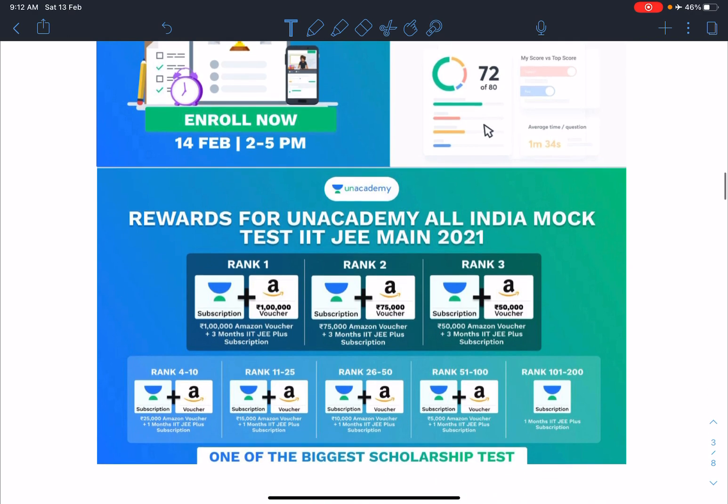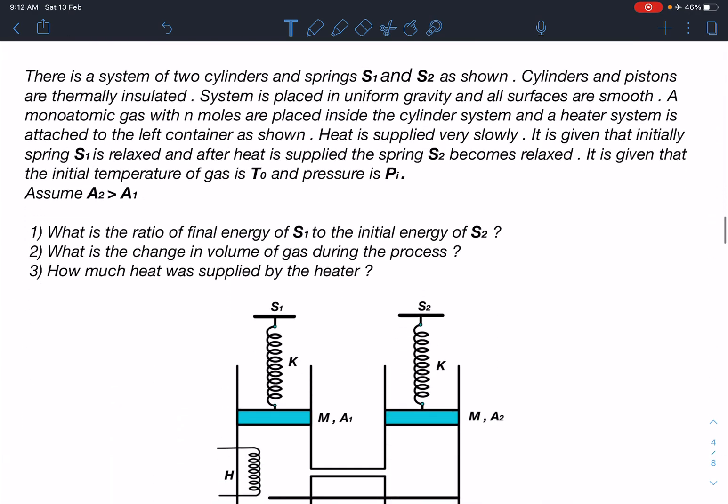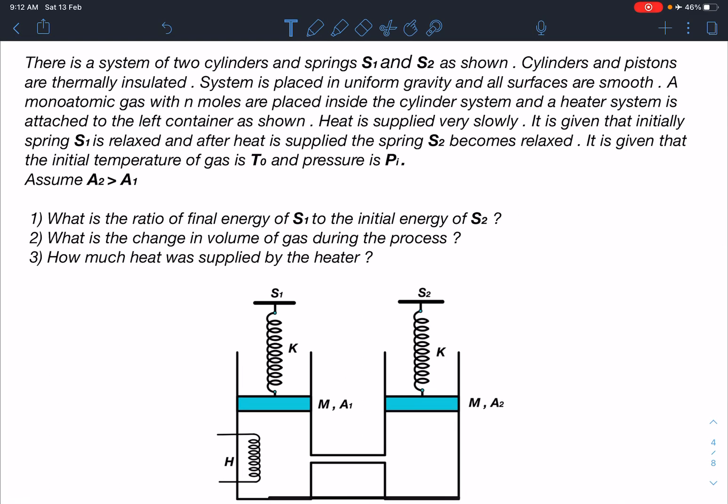Here is the statement of this problem: There is a system of two cylinders and springs S1 and S2 as shown in the figure. Cylinders and pistons are thermally insulated. The system is placed in uniform gravity and all surfaces are smooth. A monoatomic gas with n moles is placed inside the cylinder system and a heater system is attached to the left container. Heat is applied very slowly. Initially spring S1 is relaxed, and after heat is supplied, spring S2 becomes relaxed. The initial temperature of the gas is T0 and pressure is P0.